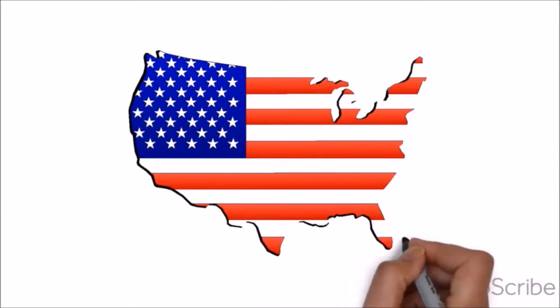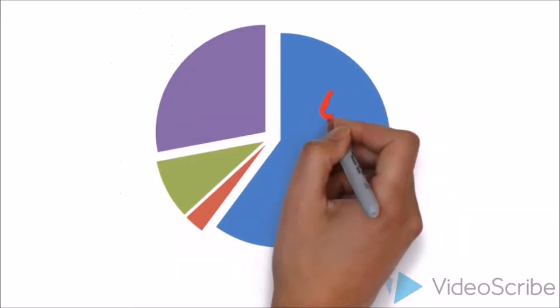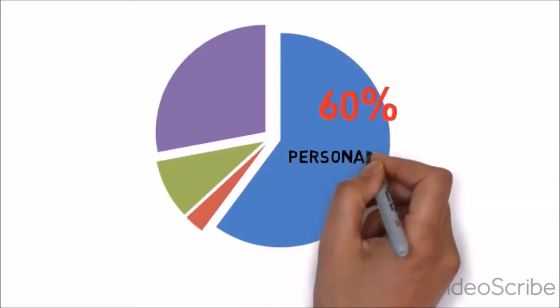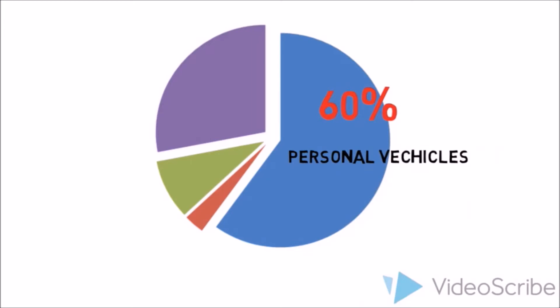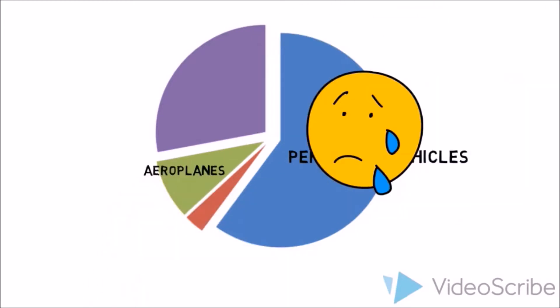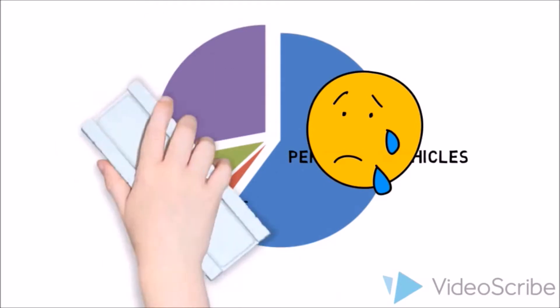Furthermore, did you know that in the US, personal vehicles actually consume more than 60% of the energy used for transportation? This is a large amount as compared to 9% for aeroplanes and 3% for trains and buses respectively.